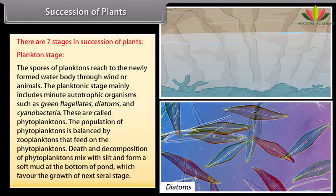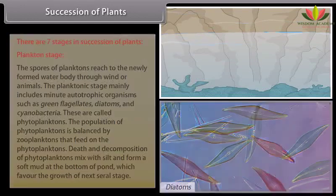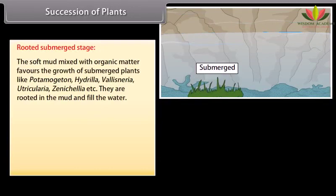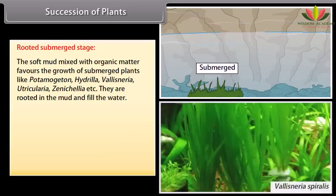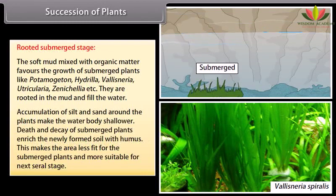The population of phytoplanktons is balanced by zooplanktons that feed on the phytoplanktons. Death and decomposition of phytoplanktons mix with silt and form a soft mud at the bottom of the pond, favoring the growth of the next seral stage. Rooted submerged stage: the soft mud mixed with organic matter favors the growth of submerged plants like Potamogeton, Hydrilla, Vallisneria, Utricularia, Zannichellia, etc. Accumulation of silt and sand around the plants makes the water body shallower. Death and decay of submerged plants enrich the newly formed soil with humus, making the area less fit for submerged plants.